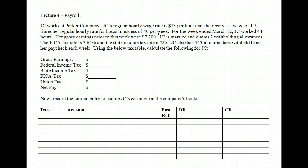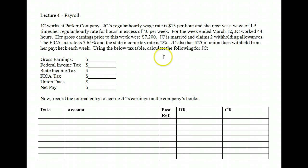JC also has $25 in union dues withheld from her paycheck each week. Using the tax table provided, calculate the following for JC. First off is gross earnings. How would we calculate gross earnings? Notice there are two things we have to consider: up to 40 hours she makes one rate, and anything over that she makes time and a half.